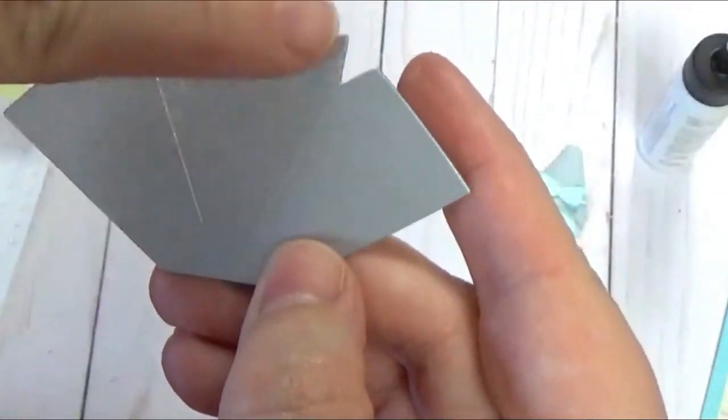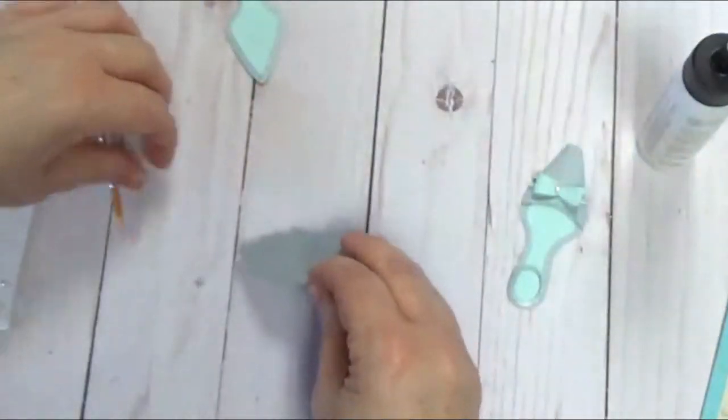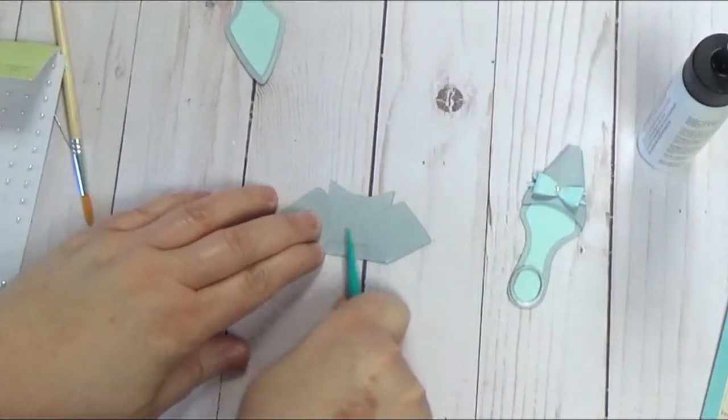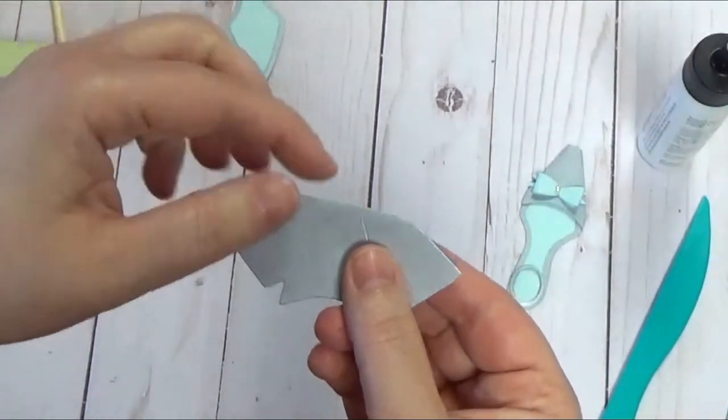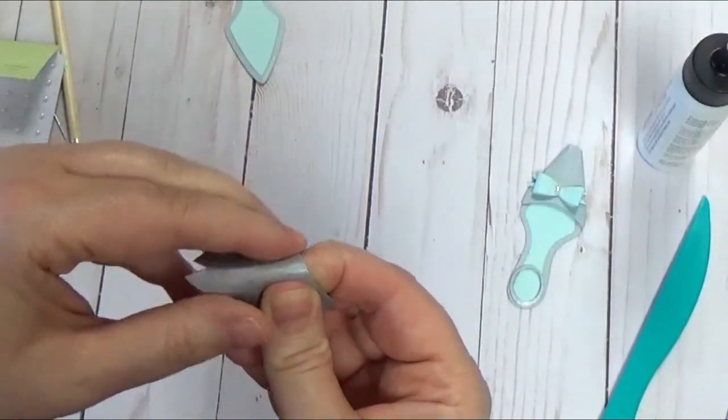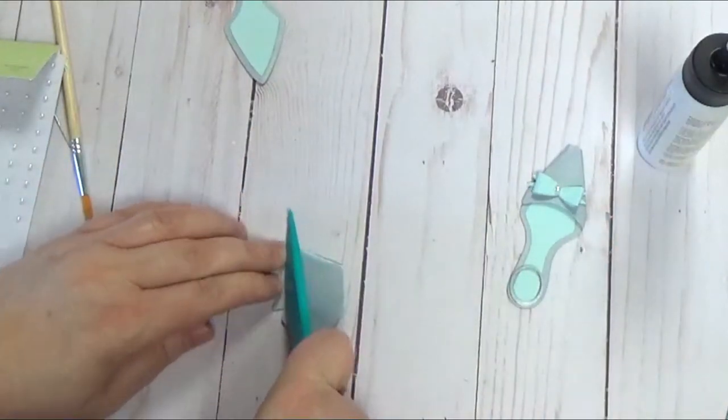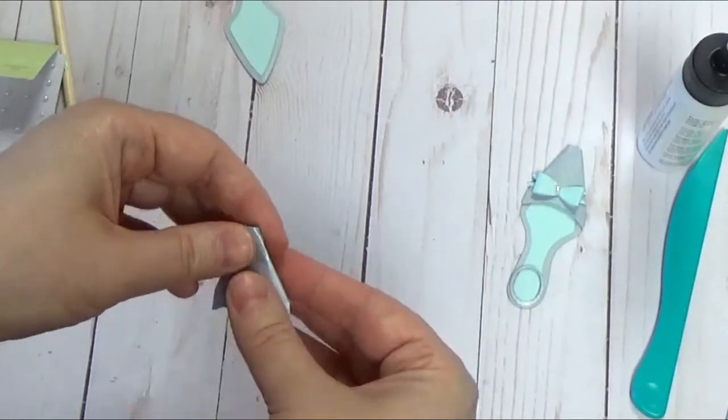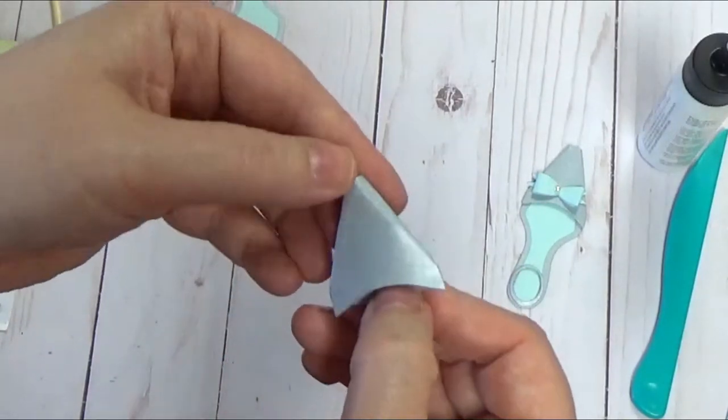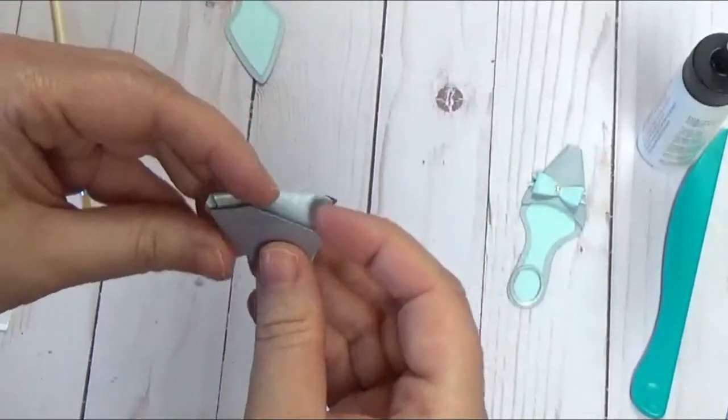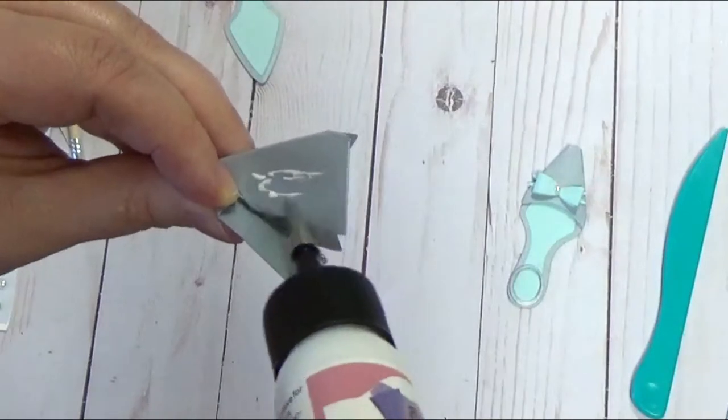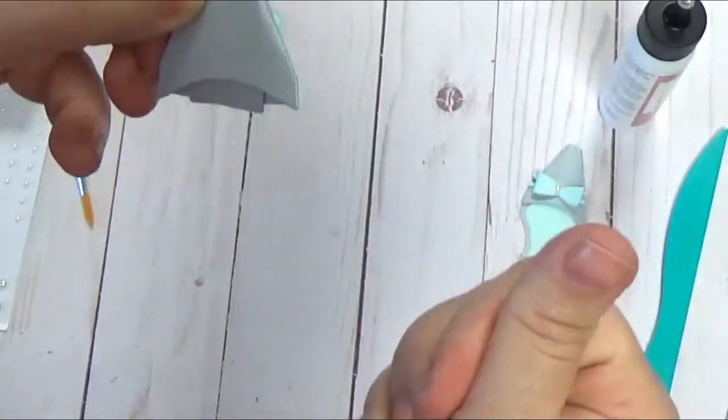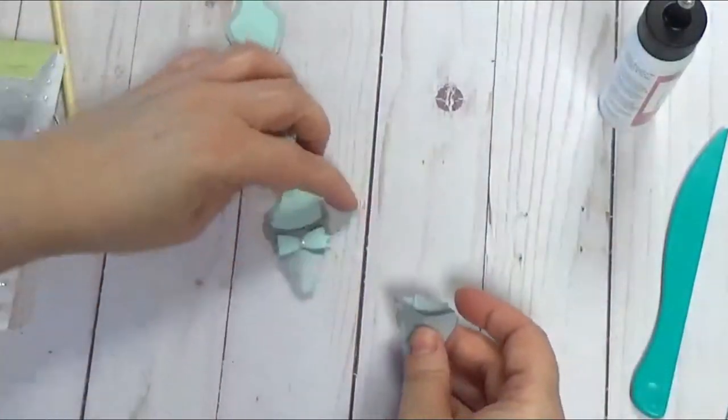So this piece here has score lines, so this particular one we want to go ahead and just score flat. You can use a bone folder if you've got that handy. This is our pointed foot so we want to go ahead and bend that round. Don't quite have to squash that down because we kind of want it to look like that's our shoe. Then we're just going to put glue on that back flap and let that dry.